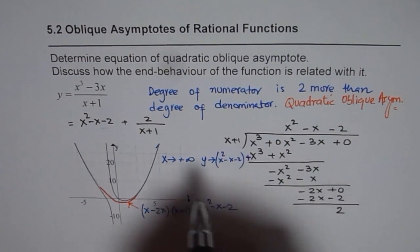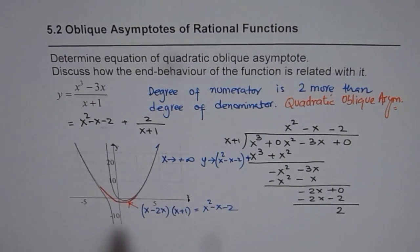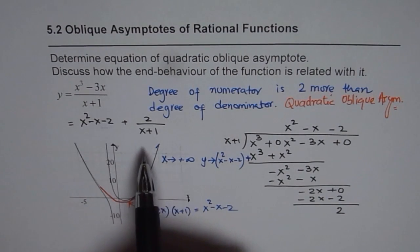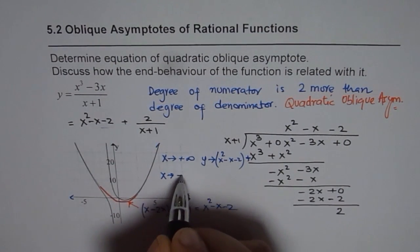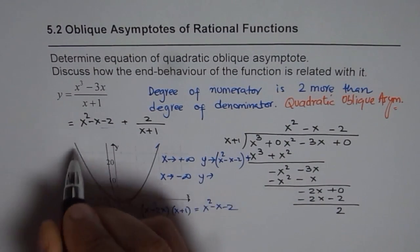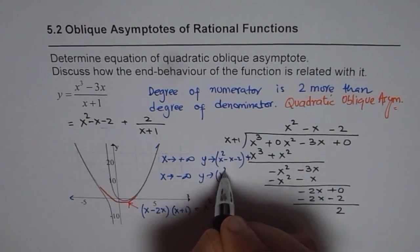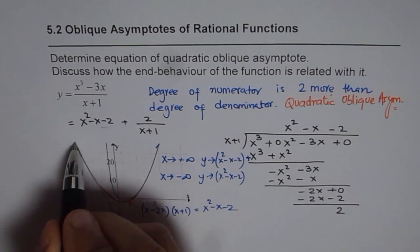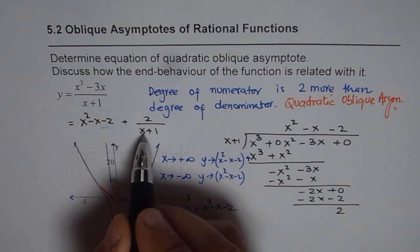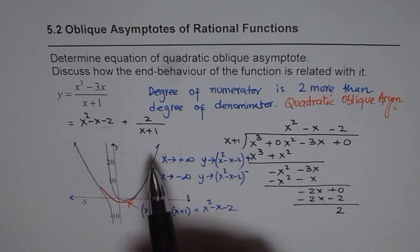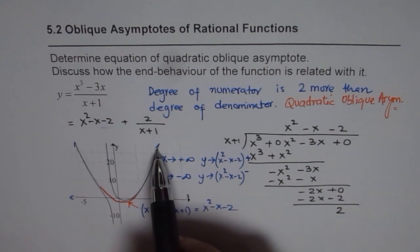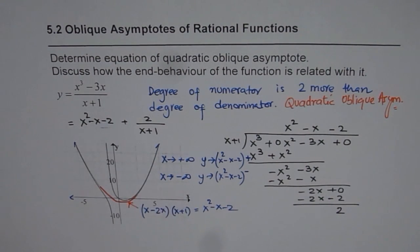From the positive side, the function is higher by 2 over x plus 1, however small that may be. When x approaches negative infinity, y approaches the parabola x squared minus x minus 2 again, but this time from the bottom — since x is negative, the remainder term is negative, so the parabola is above the function. The important thing to understand is that the function approaches a parabola as x approaches plus or minus infinity, and that is why we say we have a quadratic oblique asymptote.